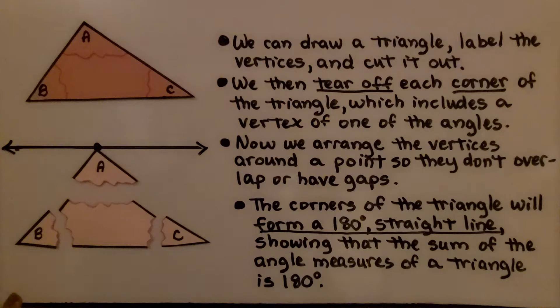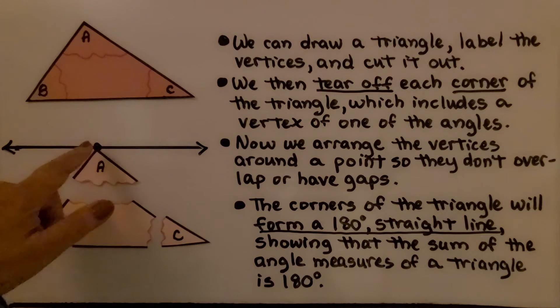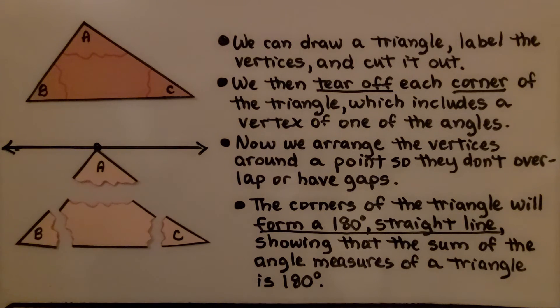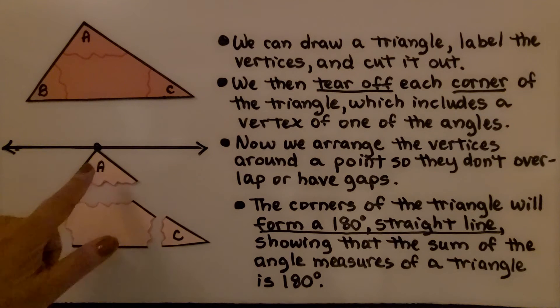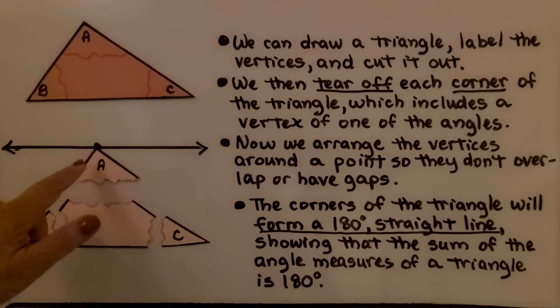Now we arrange the vertices around a point so they don't overlap or have gaps. So I have A here, right on the point.